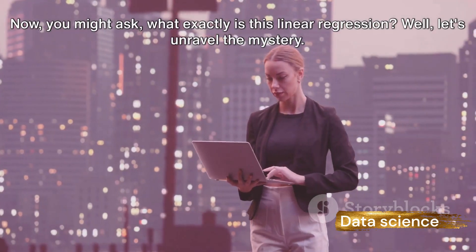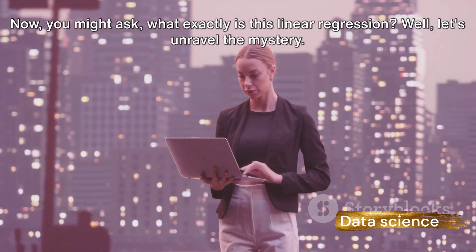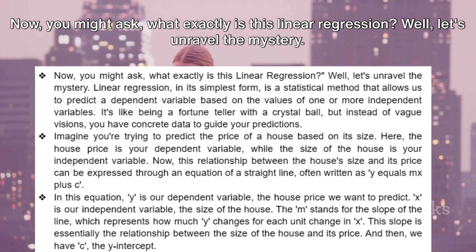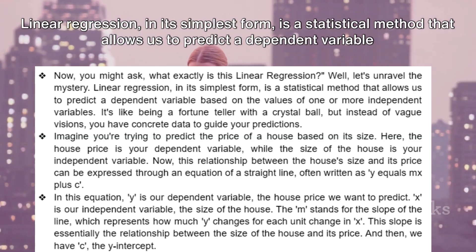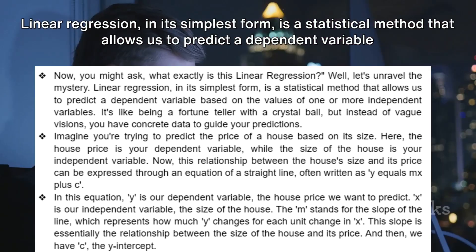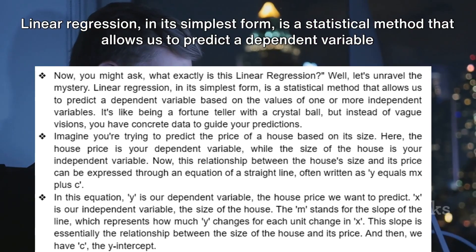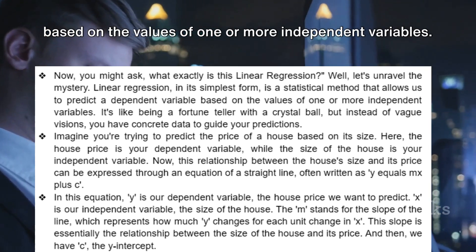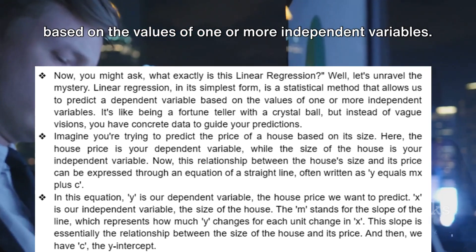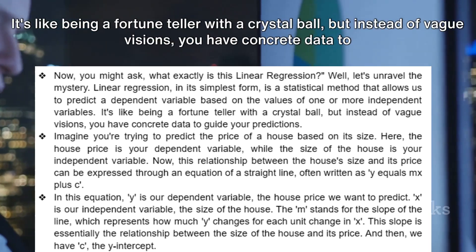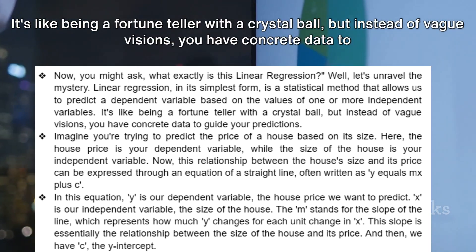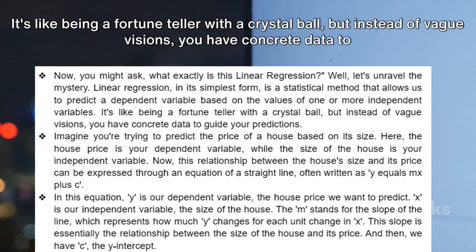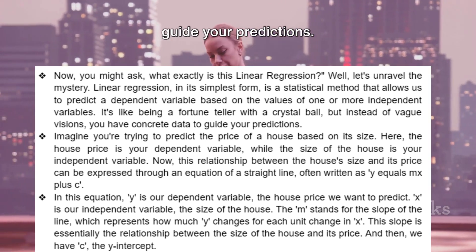What exactly is linear regression? Let's unravel the mystery. Linear regression in its simplest form is a statistical method that allows us to predict a dependent variable based on the values of one or more independent variables. It's like being a fortune teller with a crystal ball, but instead of vague visions, you have concrete data to guide your predictions.